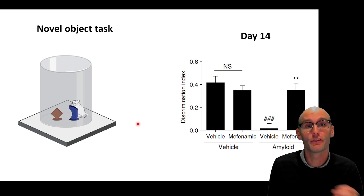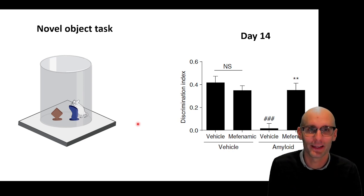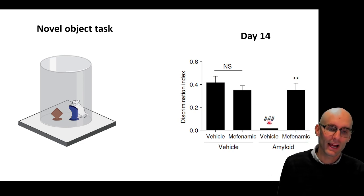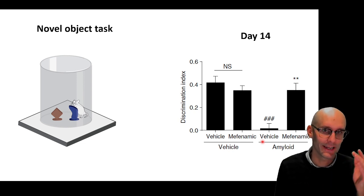But a mouse with very poor memory will spend an equal time around both objects because it can't figure out which one's the one it's seen before, can't remember it, and which one's the new object. So both objects appear to be new to a mouse with very poor memory. So at 14 days with these rats, we found that the control animals that had been administered amyloid could distinguish between the new object and the old object, and they spent more time around the new object. The rats injected with amyloid couldn't distinguish and spent equal time around the old object and the new object.